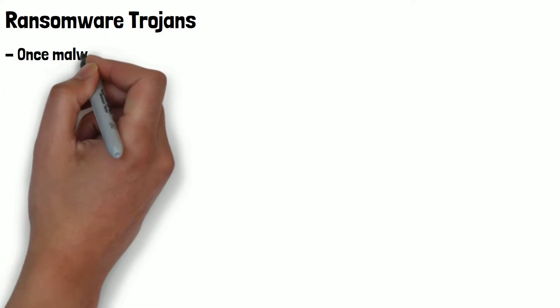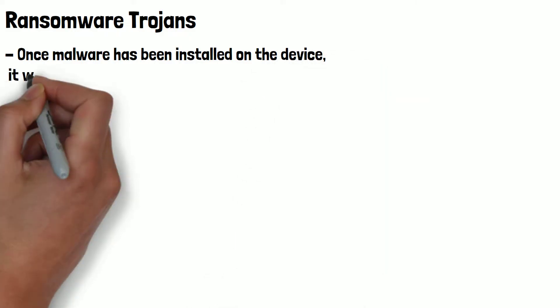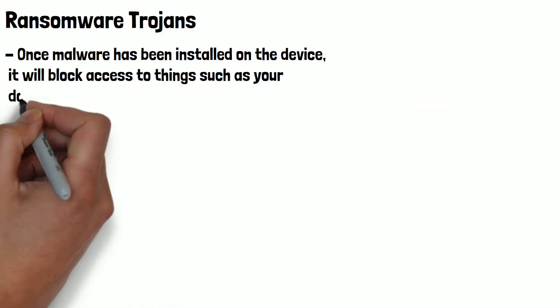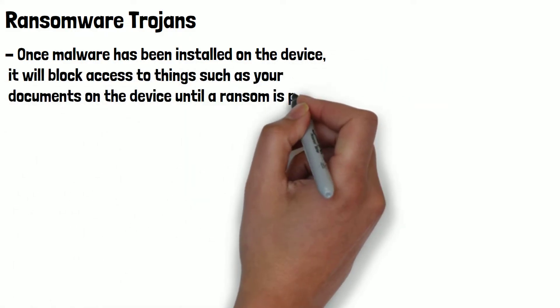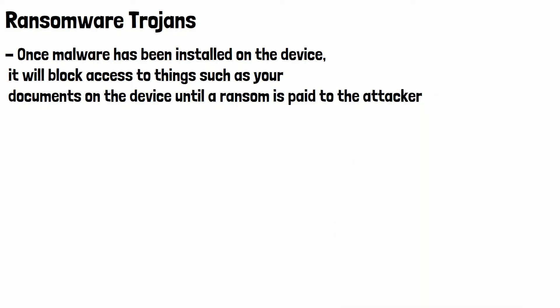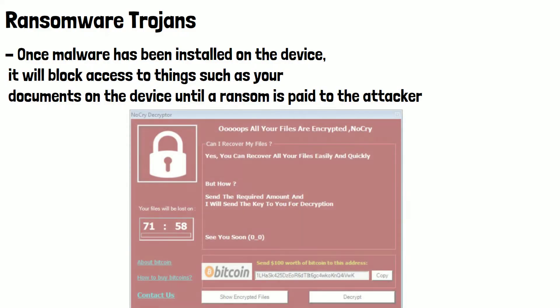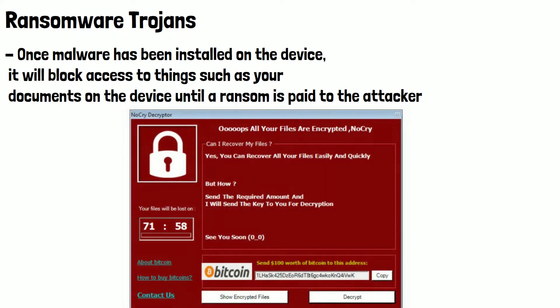Ransomware Trojans are also common. Once the victim has downloaded what they thought was a legitimate file and the malware has been installed on the device, it will block access to things such as your documents until a ransom is paid to the attacker. They may threaten to leak or delete data on your device until you've paid them. Here is a screenshot of what it might look like if a ransomware Trojan has been installed on your device. The attacker will often request payment in crypto to make it harder to trace them.